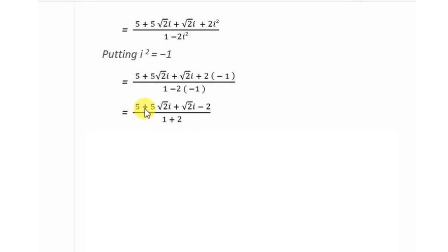Now, getting the like terms together: 5 minus 2, and 5 root 2i plus root 2i. So 5 minus 2 is 3, and 5 root 2i plus root 2i is 6 root 2i, divided by 3.